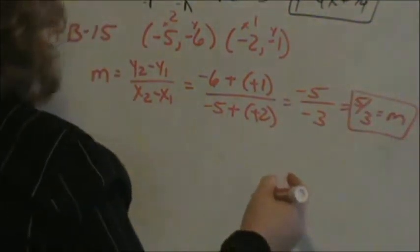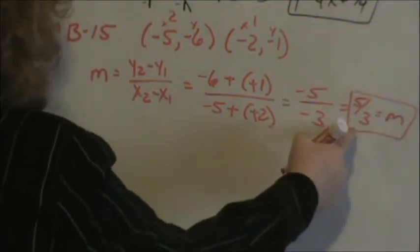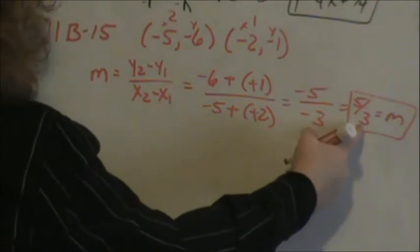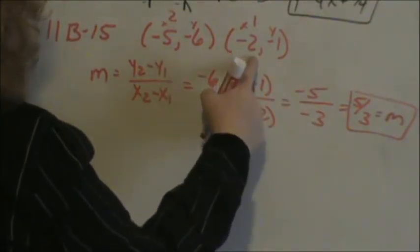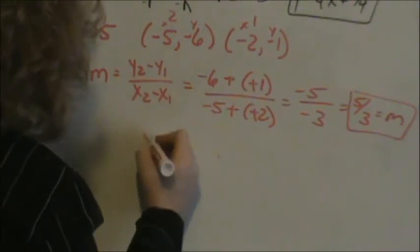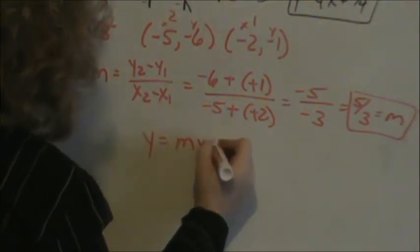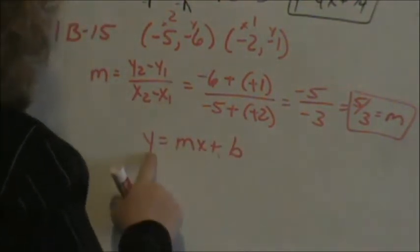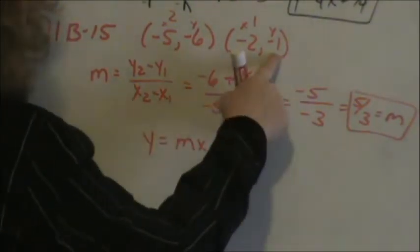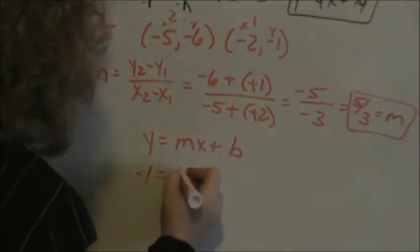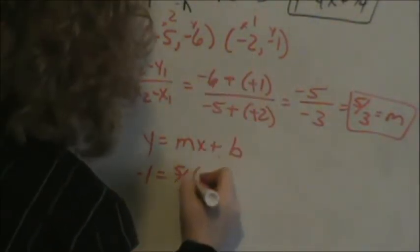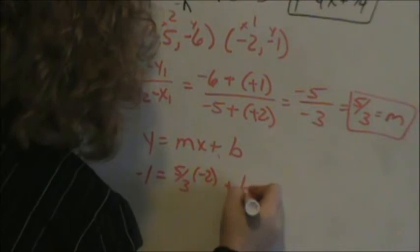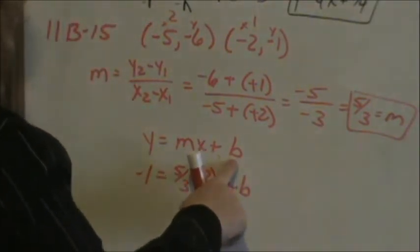Now we want to calculate our y-intercept. So we have a slope and we have an x and y value. I'm going to choose 0.1. And we plug those into y equals mx plus b to calculate b. My y value was negative 1. My slope was 5 thirds. My x value, negative 2 plus b. That's the only unknown I should have.